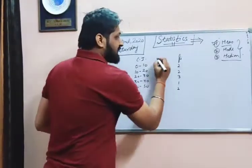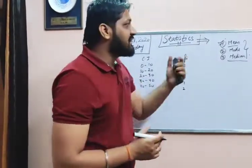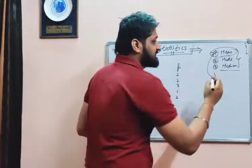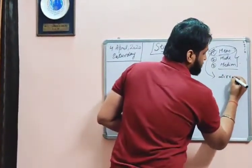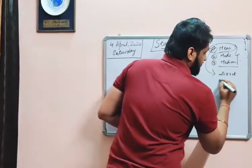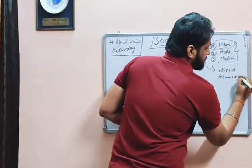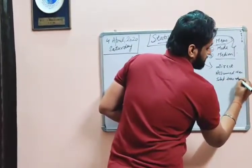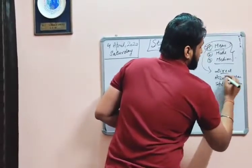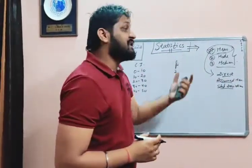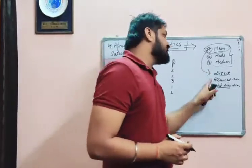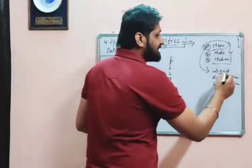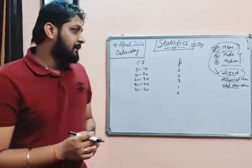We will find the mean by the direct method. There are three methods to find the mean: the direct method, the assumed mean method, and the step deviation method. These are the three methods to find the mean of grouped data. Today we will discuss about the direct method and how to find the mean using it.